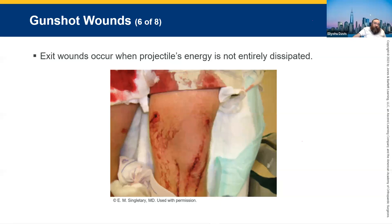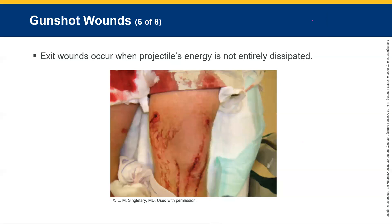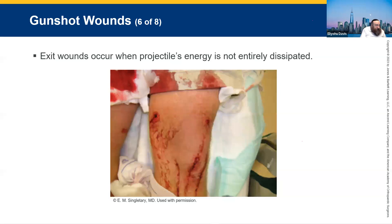Let's talk about exit wounds. If somebody does get shot, it's very important to look for the entry and the exit wound. Exit wounds are typically larger than entry wounds, and you've got to find them. There's not always an exit wound — I've seen many people that have been shot where there was no exit wound because the bullet got lodged in a rib or even in an organ inside. But you've got to look for the exit wound.